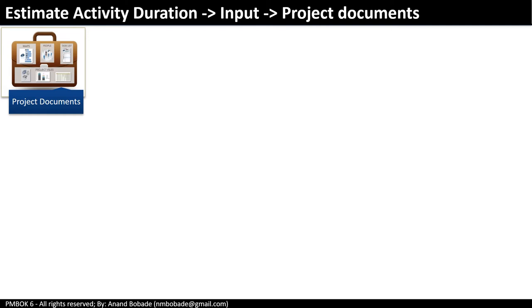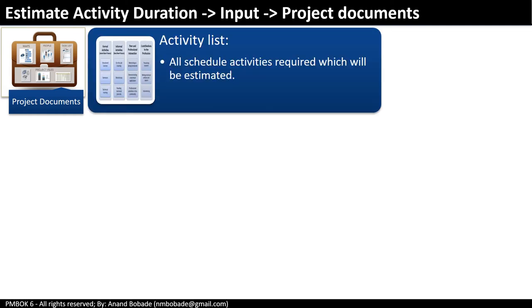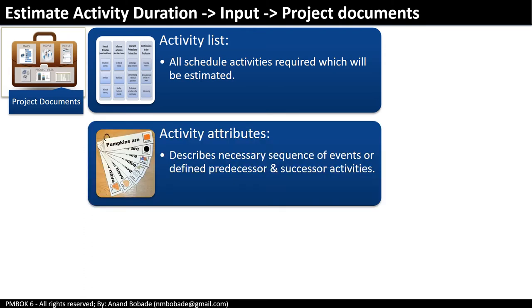The activity list includes all activities needed for the project, each of which will be estimated in this process. Activity attributes contain information about these activities — starting from the previous process, additional attributes will be identified and added here, such as predecessor or successor relationships and logical relationships between activities.